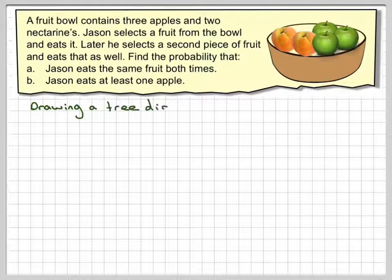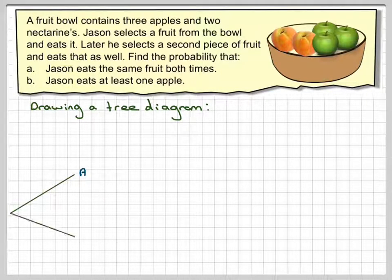Okay, so drawing a tree diagram. When Jason goes to the bowl he can choose either an apple or a nectarine. The probability of getting an apple is three out of five and the probability of getting a nectarine is two out of five.